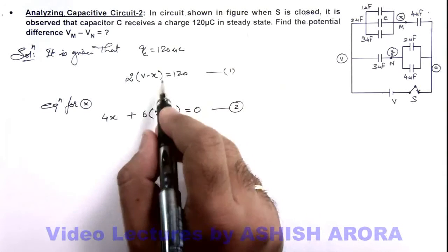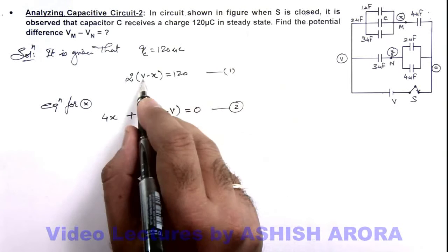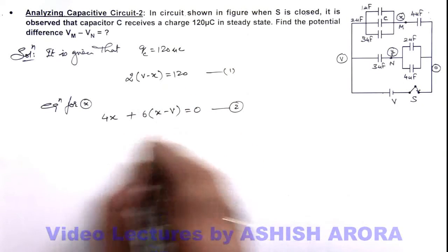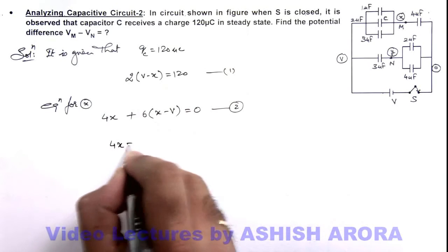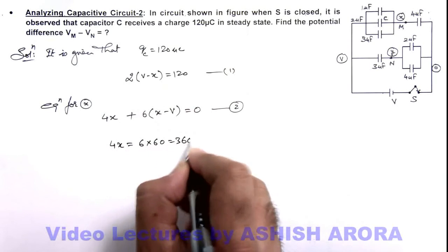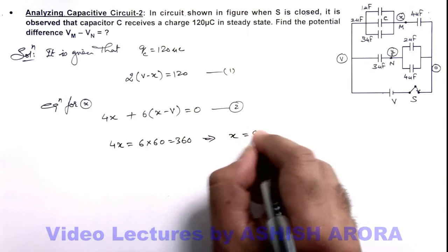From equations 1 and 2, we can further simplify. V minus x we can substitute as 60. This will result 4x is equal to 6 multiplied by 60 which is 360. So this will result to the value of x which is 90 volts.